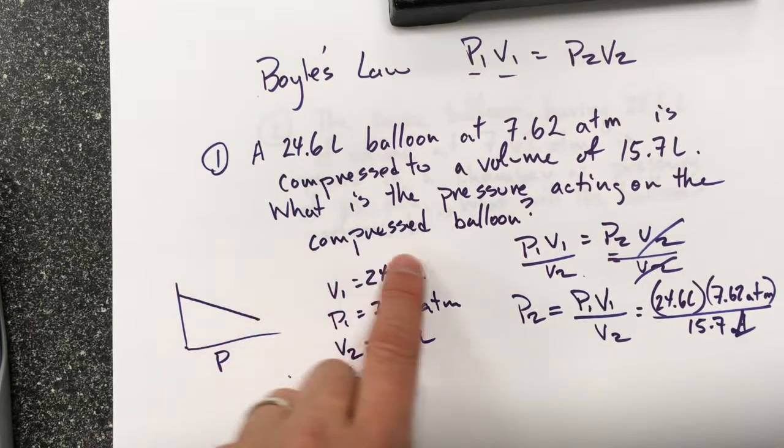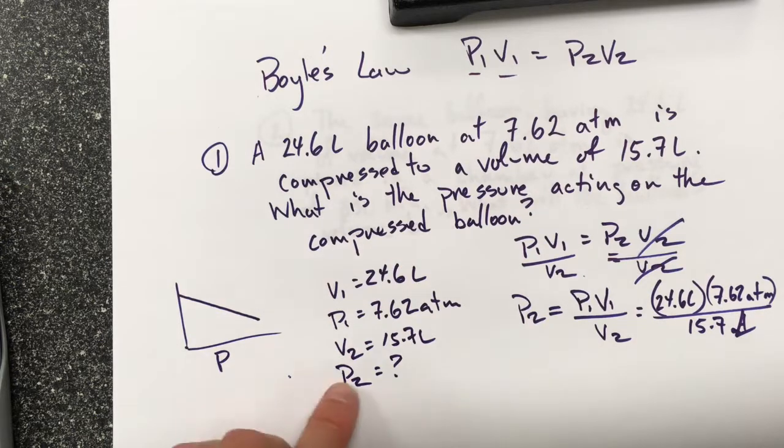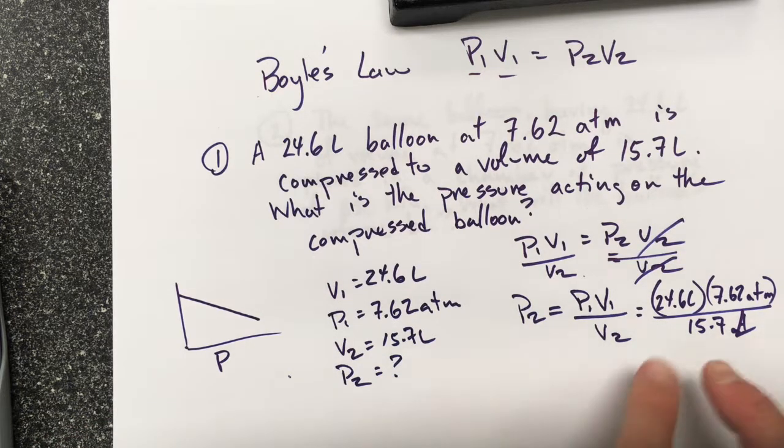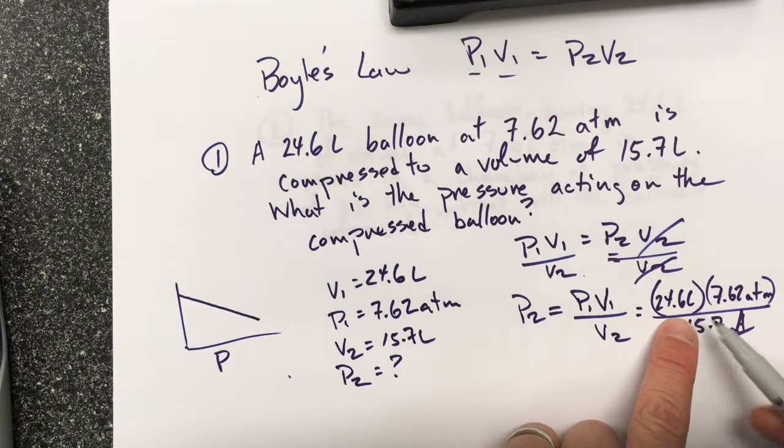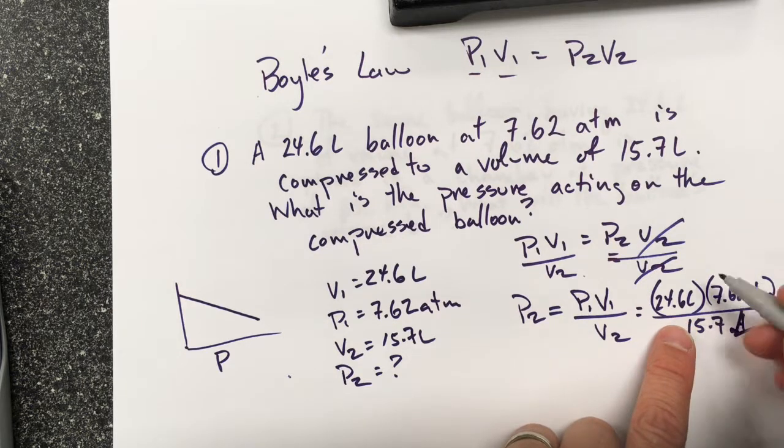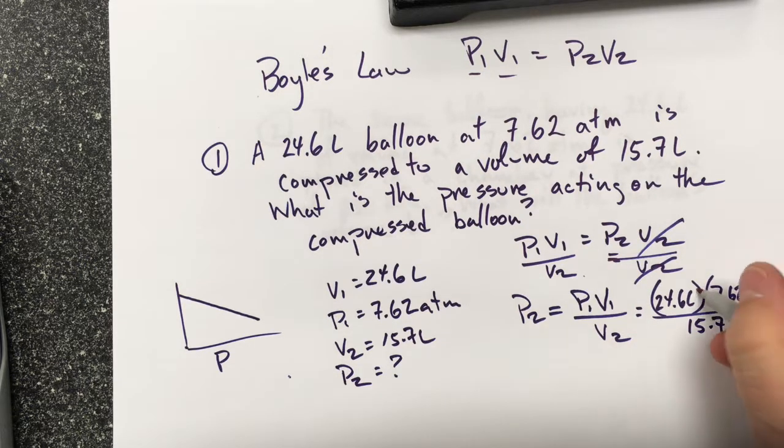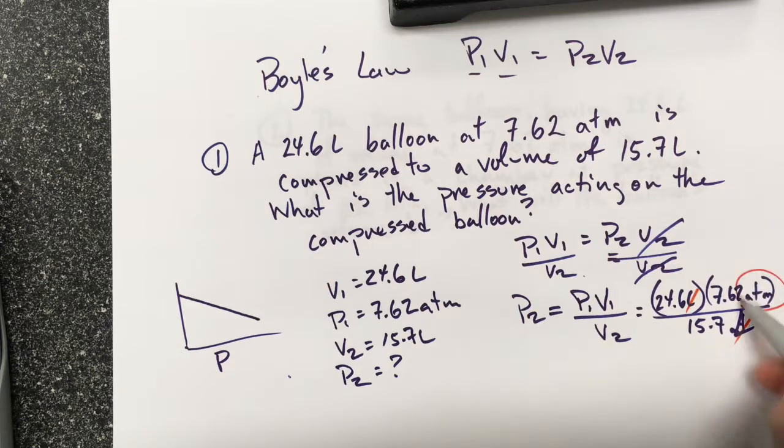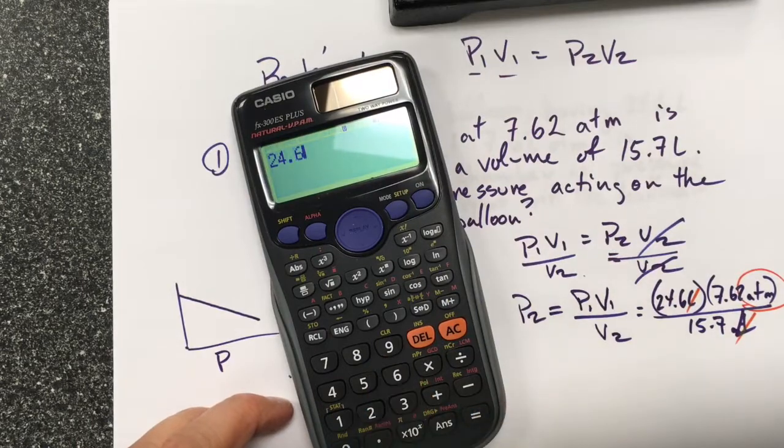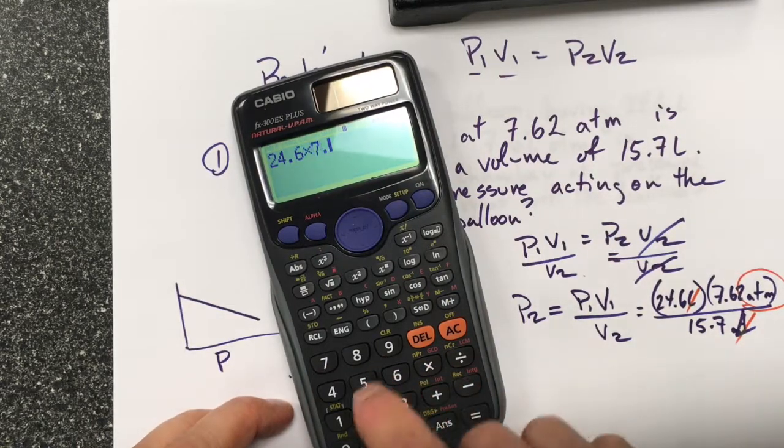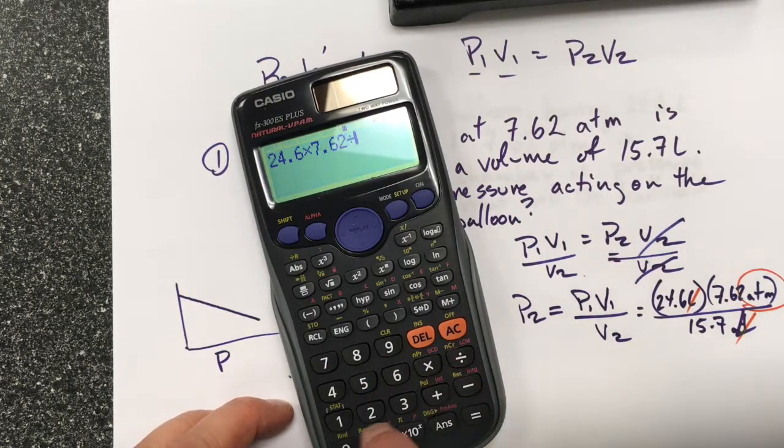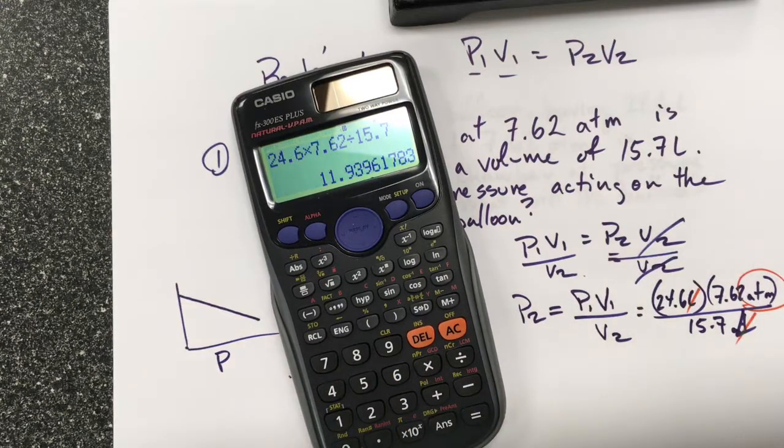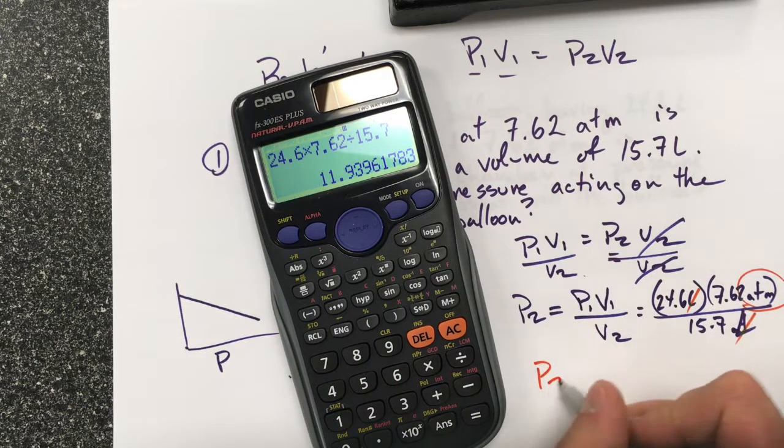Now, before we go on, this is a compressed balloon. I expect the second pressure to be greater, and the volume for the compressed balloon is smaller. I also want to make sure my units agree. I've got liters and liters and atm's here. Because both of my volumes are in liters, they'll cancel out and leave me a unit in atm. So I take 24.6 times 7.62 divided by 15.7, gives me 11.3 for my P2.